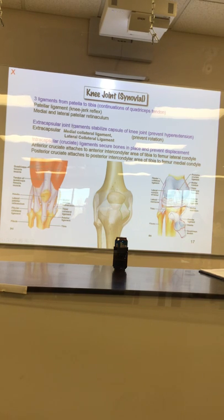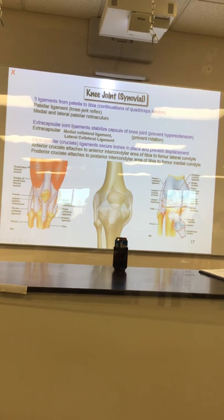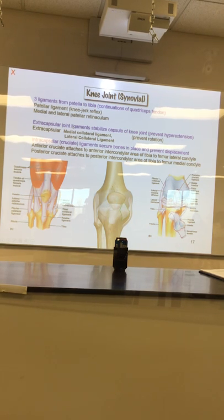That's the lateral collateral ligament, and the other must be the medial collateral ligament. These keep the leg from rocking side to side. Grab your finger — that's basically your knee — try to tweak it right to left and you feel it get tight on the sides.